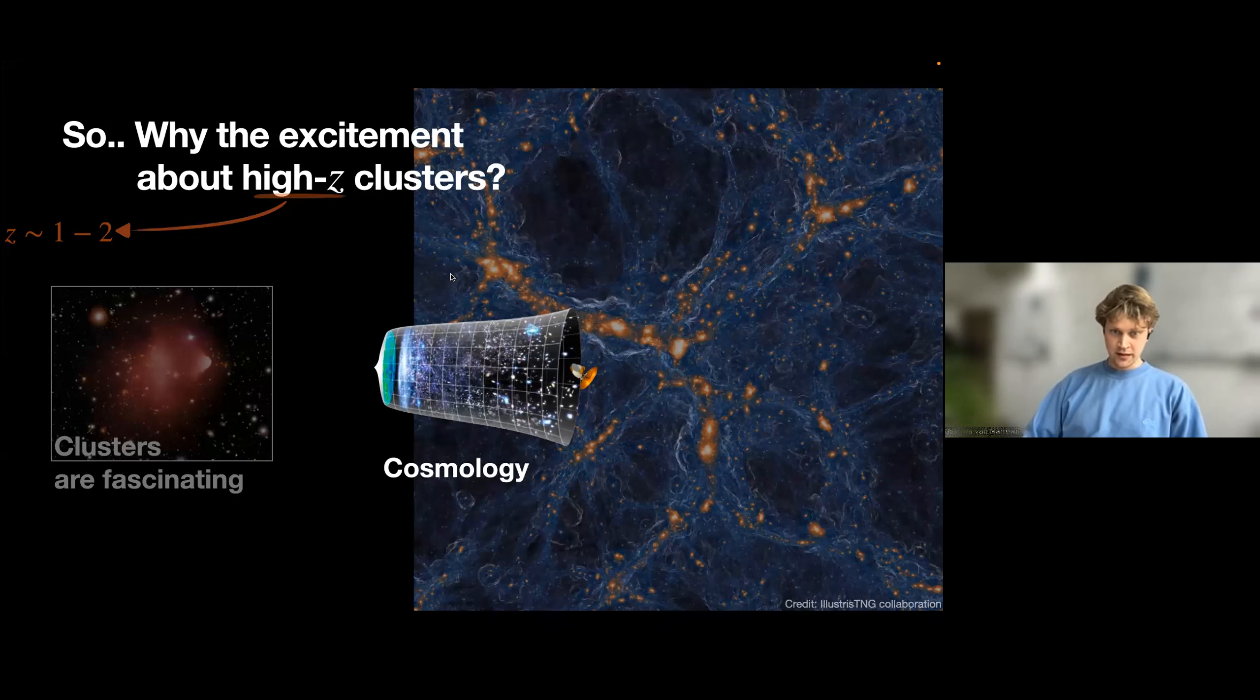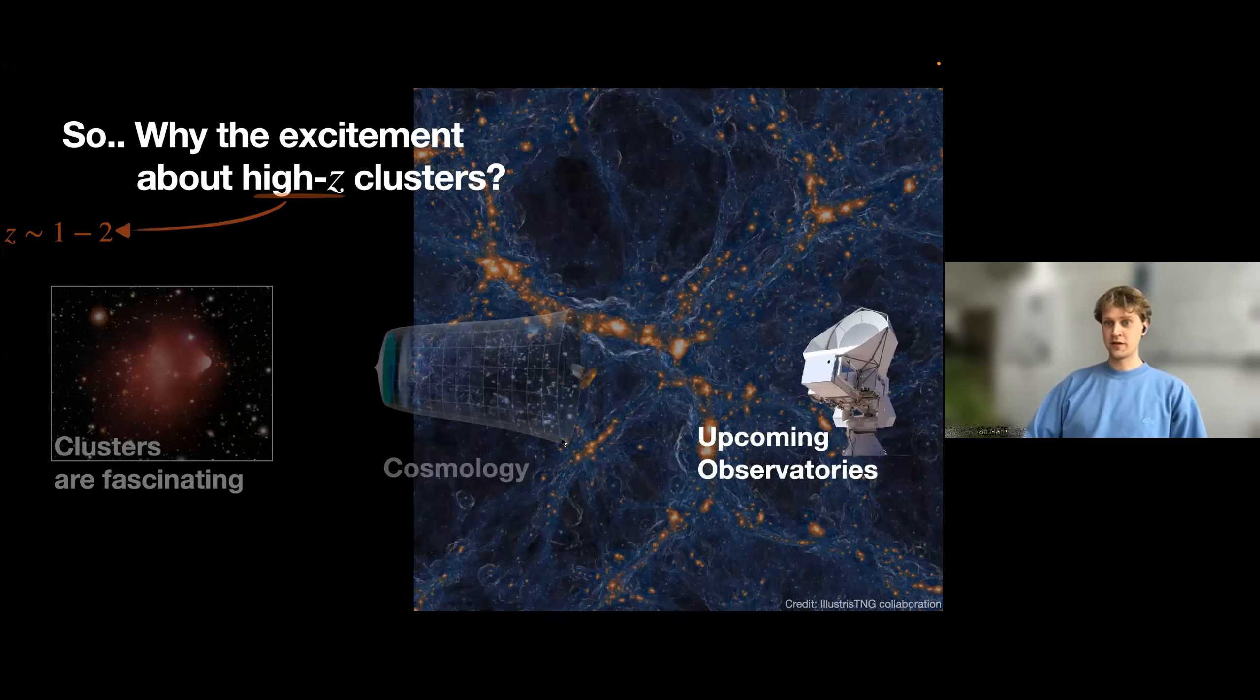And then finally, doing galaxy cluster science is a very hot topic at the moment. A lot of new observatories are coming online, for instance Toltec, but also Euclid, and James Webb will get weak lensing measurements and find proto-clusters throughout the field at higher redshifts. Also, Simons Observatory is a CMB experiment coming online next year, which is expected to find thousands of clusters above redshift 1, which is really exciting.